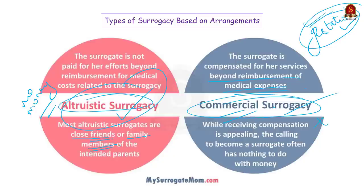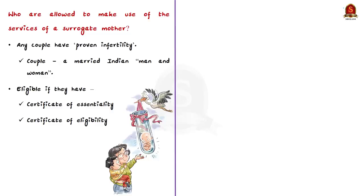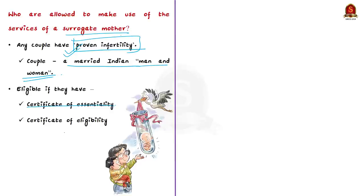These rules are part of the Surrogacy Act. First, we should know who is allowed to make use of the services of a surrogate mother. Any couple who has proved infertility can be a candidate. The law defines a couple as a married Indian man and woman. The intending couple will be eligible if they have a certificate of essentiality and a certificate of eligibility issued by the appropriate authority.